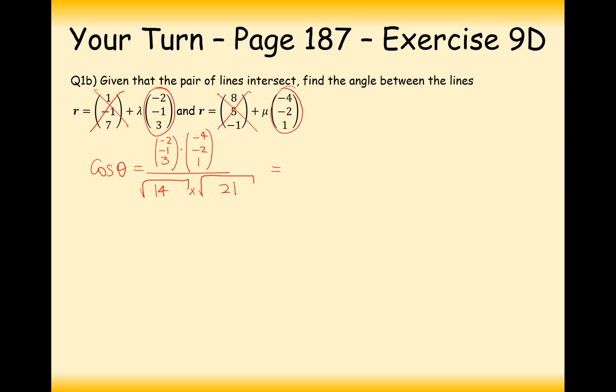In this calculation here it's going to be 8 plus 2 plus 3, so that's going to be 13. So it's going to be 13 over root 14 times root 21. Probably could simplify that. And now all we need to do is cos inverse of 13 divided by square root of 14 times 21, close brackets.